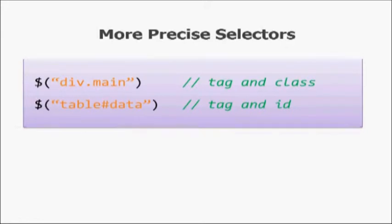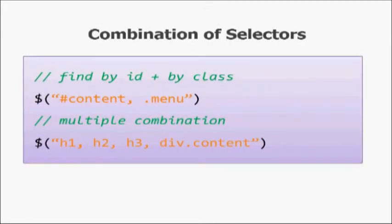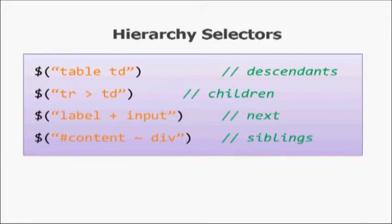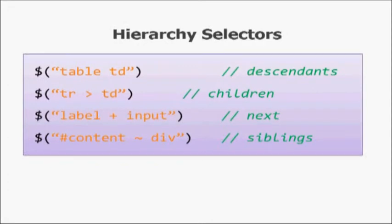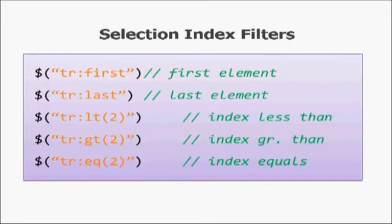If you want to combine selectors and perform an operation on multiple elements at one time, you can use them separated by a comma. Or if you want to select an element using hierarchy, you can use 'table space td'. Space looks for all descendants, greater-than looks for all direct children, plus looks for the next sibling, and tilde looks for all similar siblings.